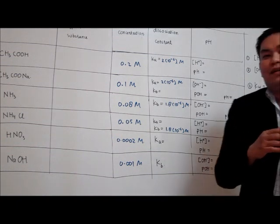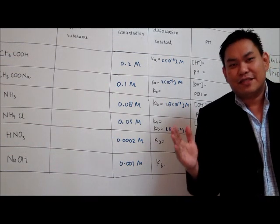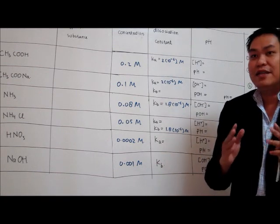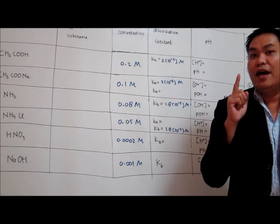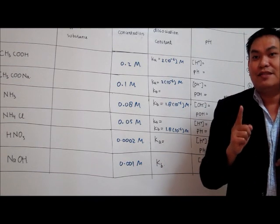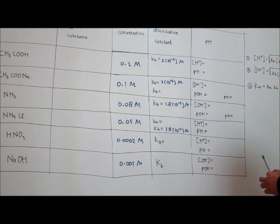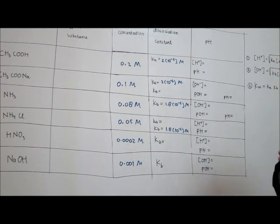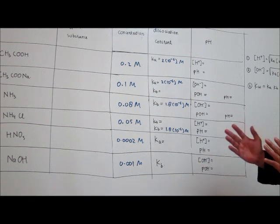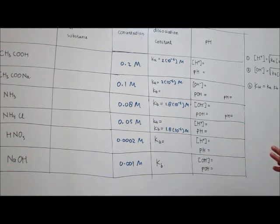First of all, they give you a certain question, then you must make sure there is only one substance in that solution. If you encounter such a solution, then what you need to do to calculate pH is very simple. You need only three formulas.